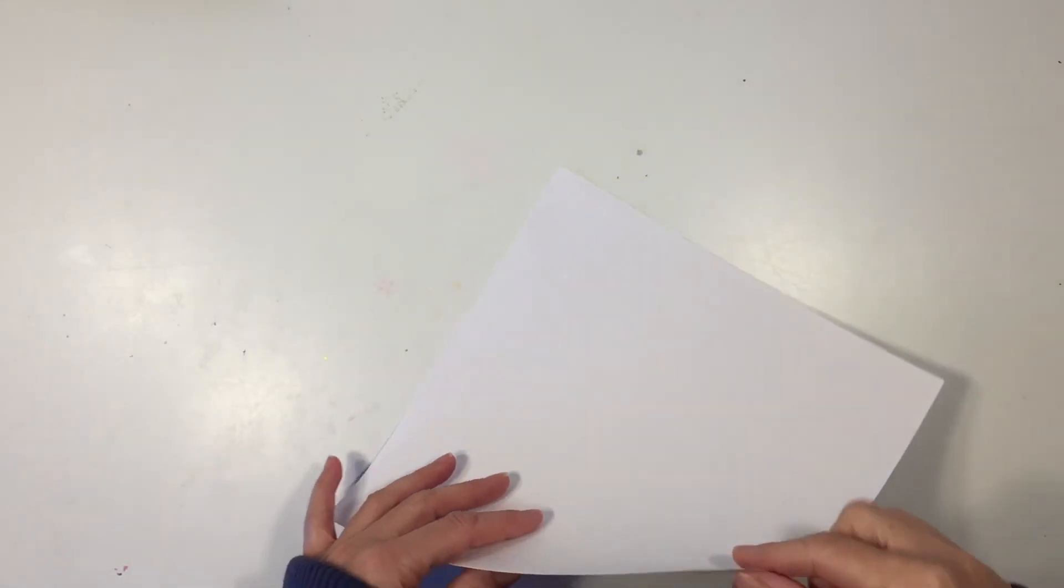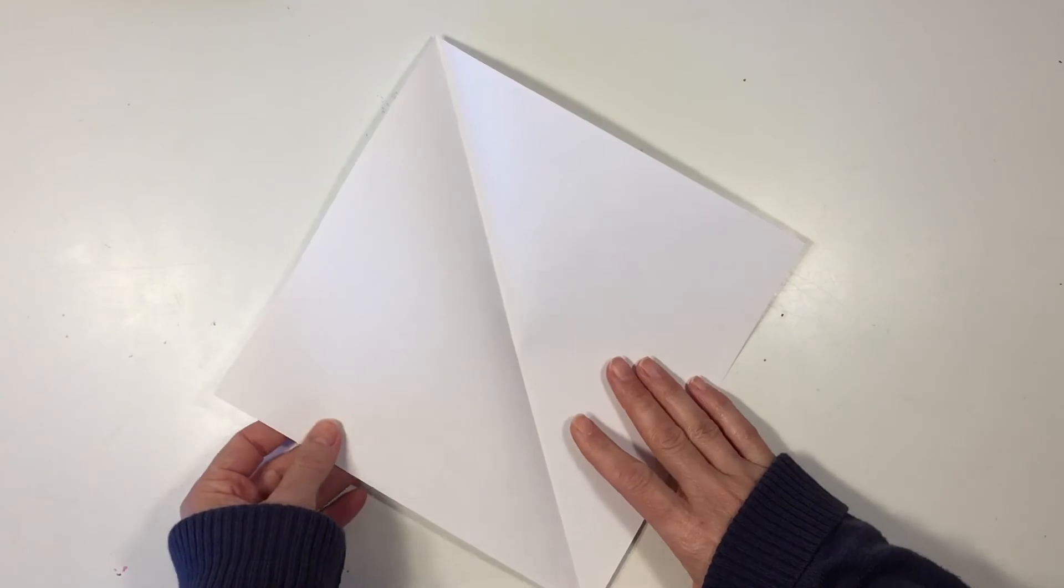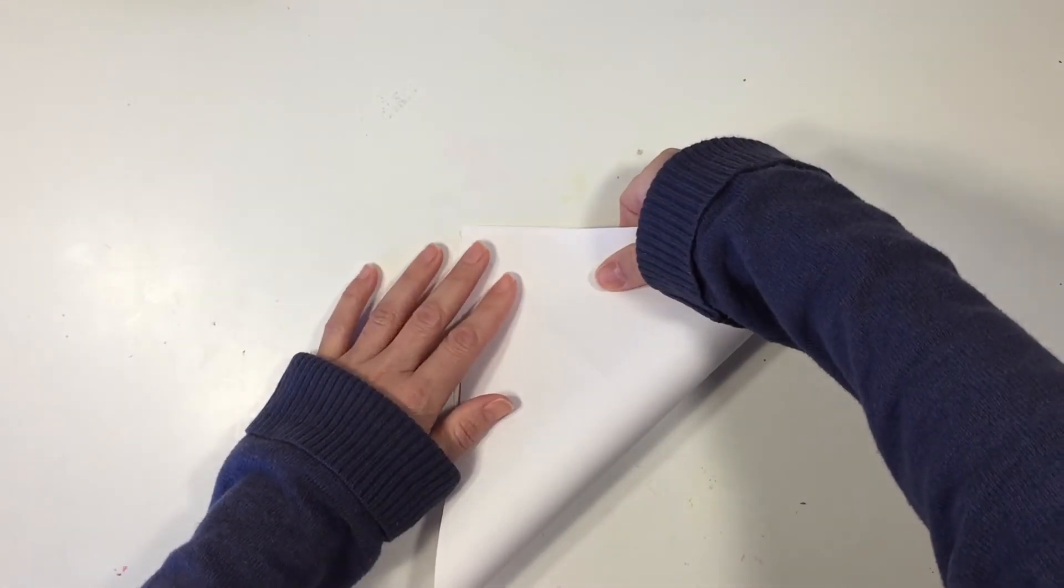The next thing you want to do is fold your paper in half. Then you're going to unfold it and fold it in half the other way.